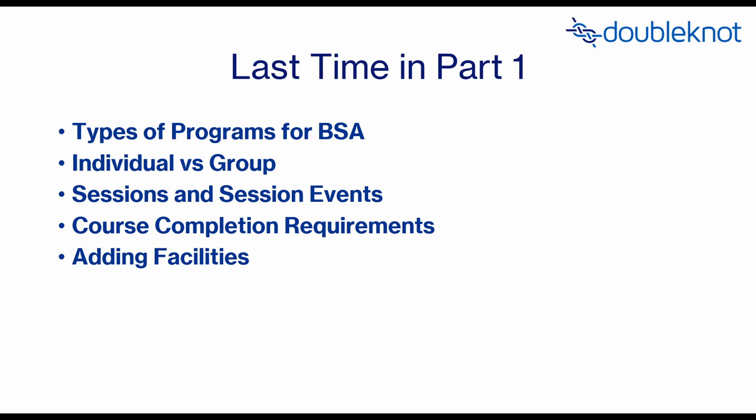Today's training video is the second part of the program module for Boy Scout councils. Last time we built out a program, discussed the different types of programs Boy Scouts use, went into building the first week of camp using the session tool, built session events and merit badges, talked about adding merit badge requirements in the DoubleKnot tool, covered facilities like campsites, cabins, and tent sites, and went into the functions of a group program, which is really the key part of Boy Scouts summer camp.